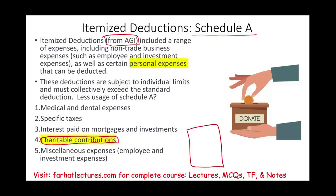On your 1040, you have a line called adjusted gross income. Any deduction listed before adjusted gross income is called 'for AGI,' and any deduction after adjusted gross income is a deduction 'from AGI.' Schedule A deductions are deductions from AGI.